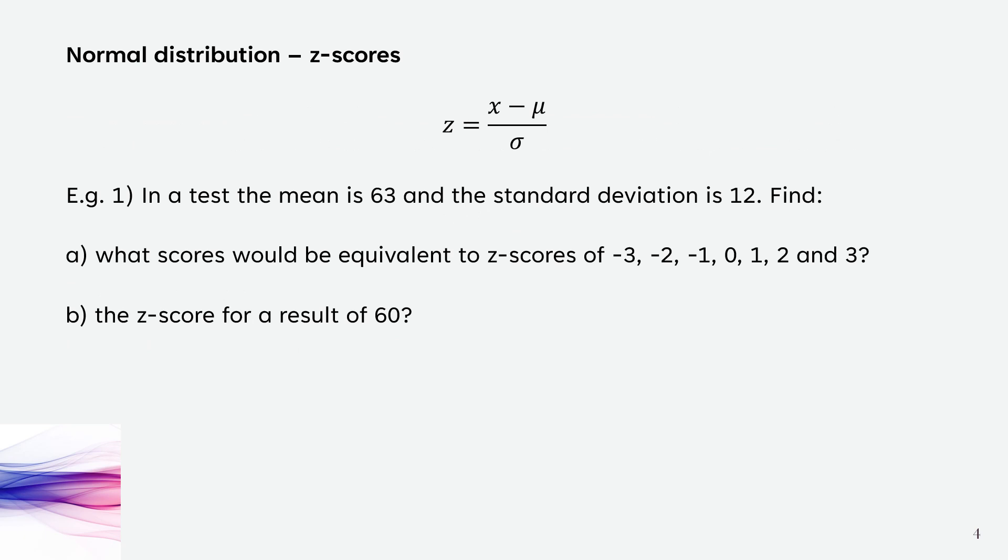Here's an example. In a test, the mean is 63 and the standard deviation is 12. We're going to find all the scores that would be equivalent to z-scores from minus 3 to 3, and the z-score for a result of 60.